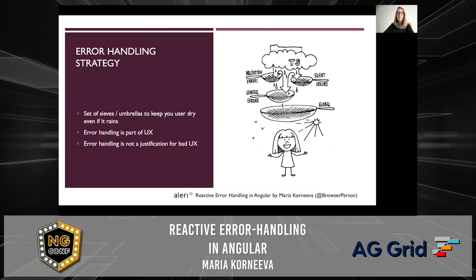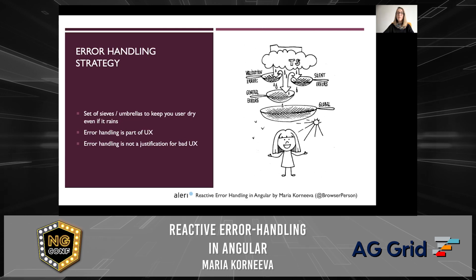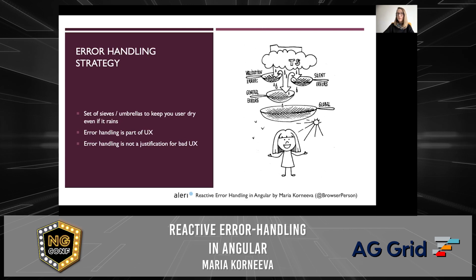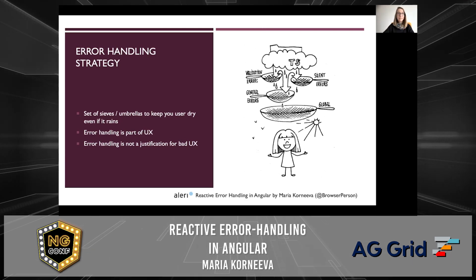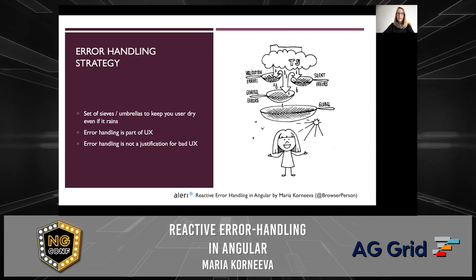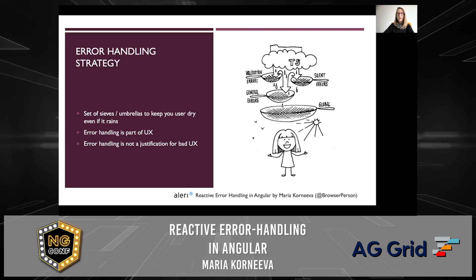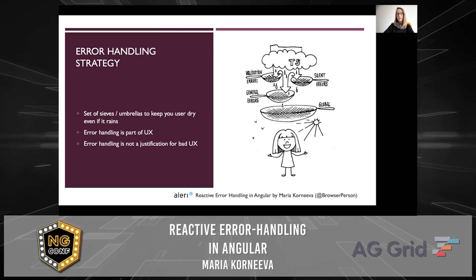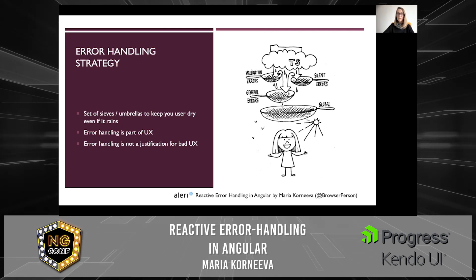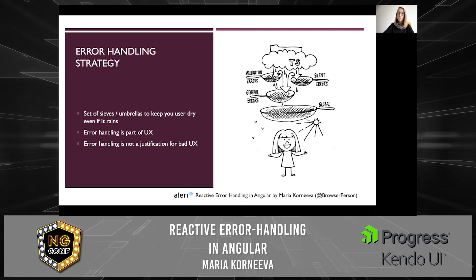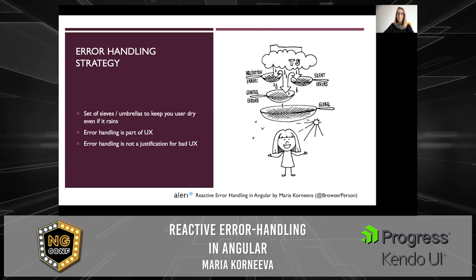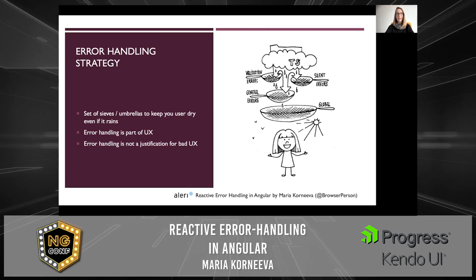We've covered a lot. Basically, error handling can be represented as a set of sieves or filters to filter out all possible and unexpected errors, so that it's always sunny in the user's world — that's what I consider great user experience. However, error handling is by no means a justification for bad UX. If those errors could happen in the first place, that's on you. So first you have to eliminate all those loopholes, and only then provide support if something goes wrong. Thank you for your attention and happy error handling.